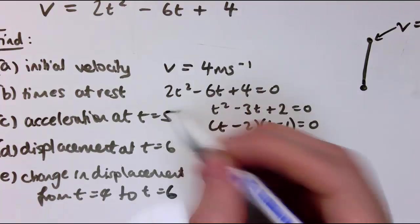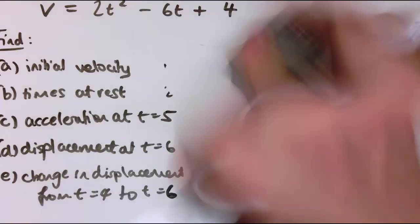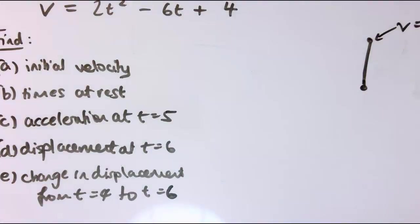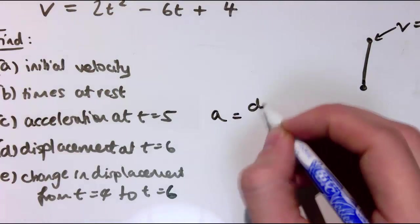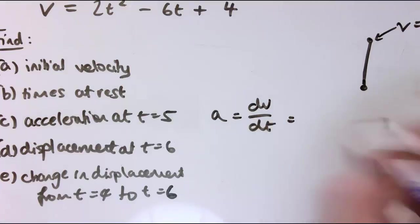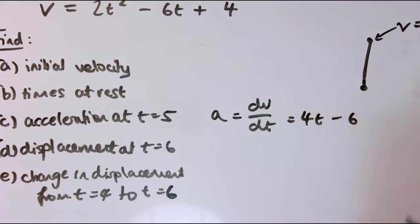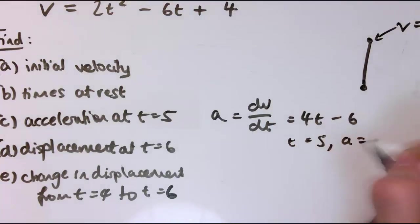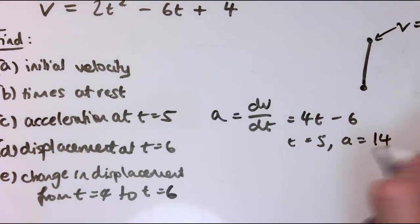To find the acceleration at t = 5, acceleration is dv/dt, so I differentiate v = 2t² − 6t + 4 to get 4t − 6. When t = 5, the acceleration is 4(5) − 6 = 14 m/s².